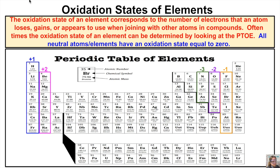If we take a look at a periodic table of elements, it will help us determine the oxidation states of different elements. The oxidation state of an element corresponds to the number of electrons that an atom either loses, gains, or appears to use when joining with other atoms in a compound. Oftentimes these oxidation states can be determined by looking at the periodic table. All neutral atoms or unbonded elements have an oxidation state equal to zero.